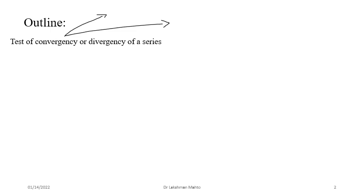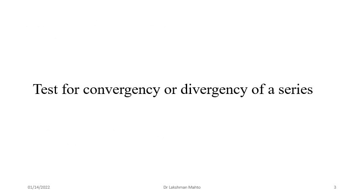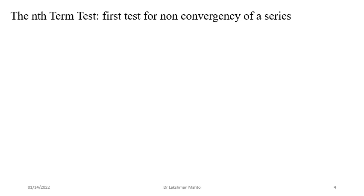One simplest result I will talk about here in the first part of this lecture. After that, we will discuss in detail about various other tests of convergency. Coming to the test of convergence — convergency or divergency of a series — we are used to always using positive words, so that's why I say the test of convergency. Otherwise, few people may call it the test of divergency as well, meaning you are finding whether a series is divergent or not.